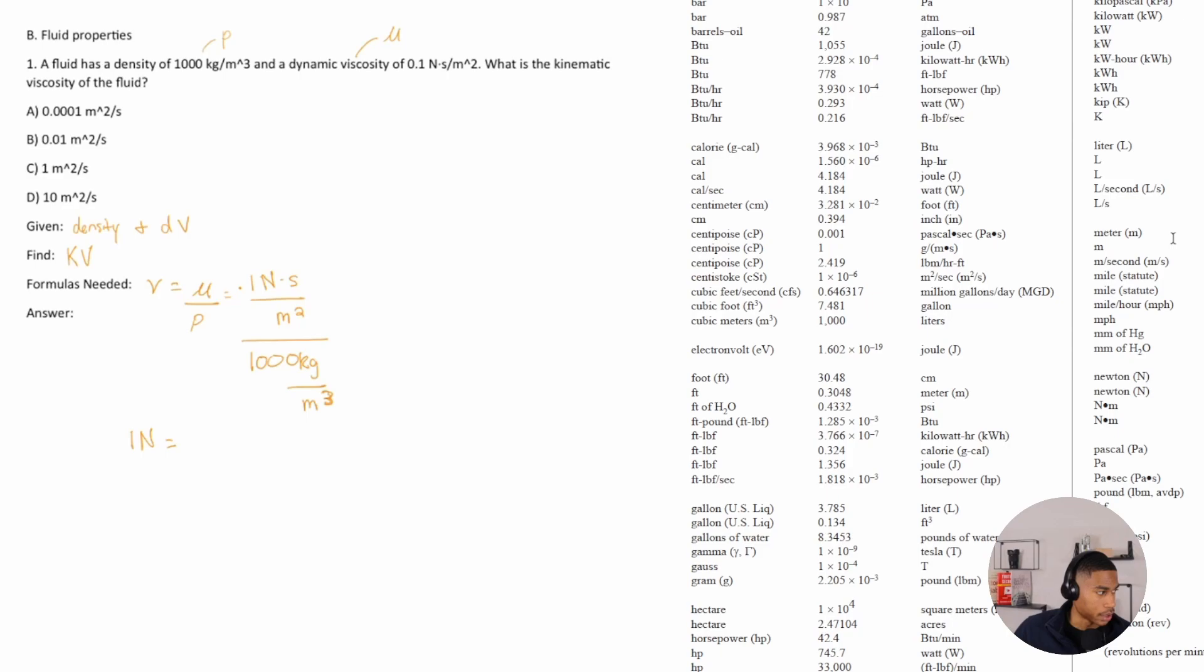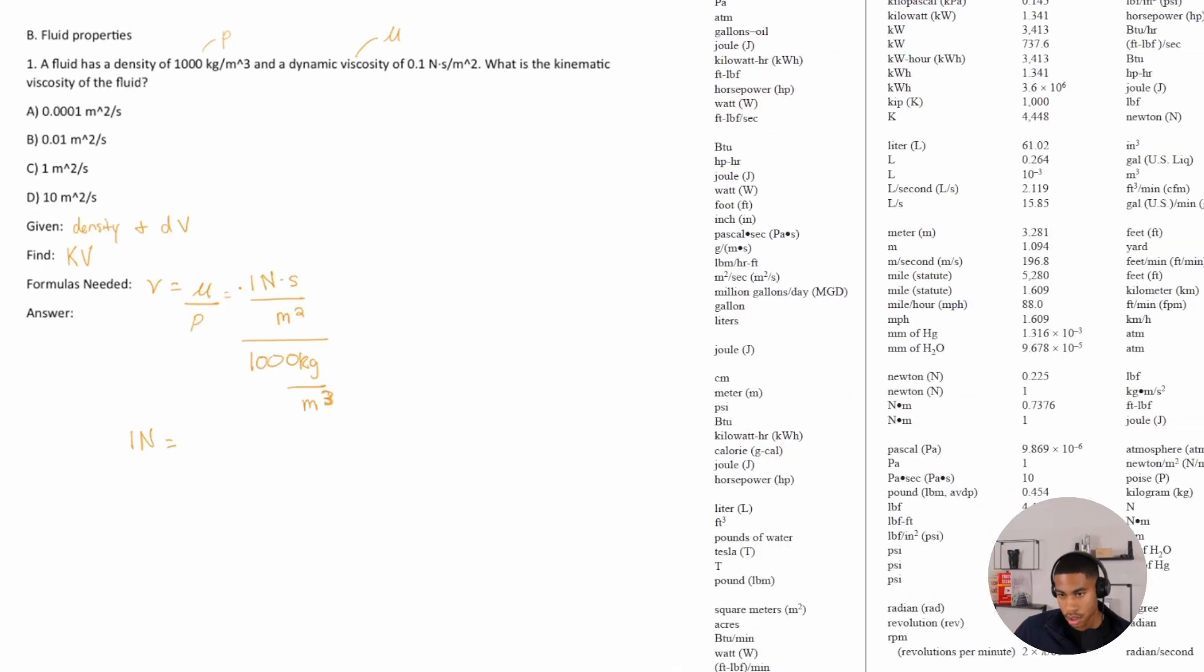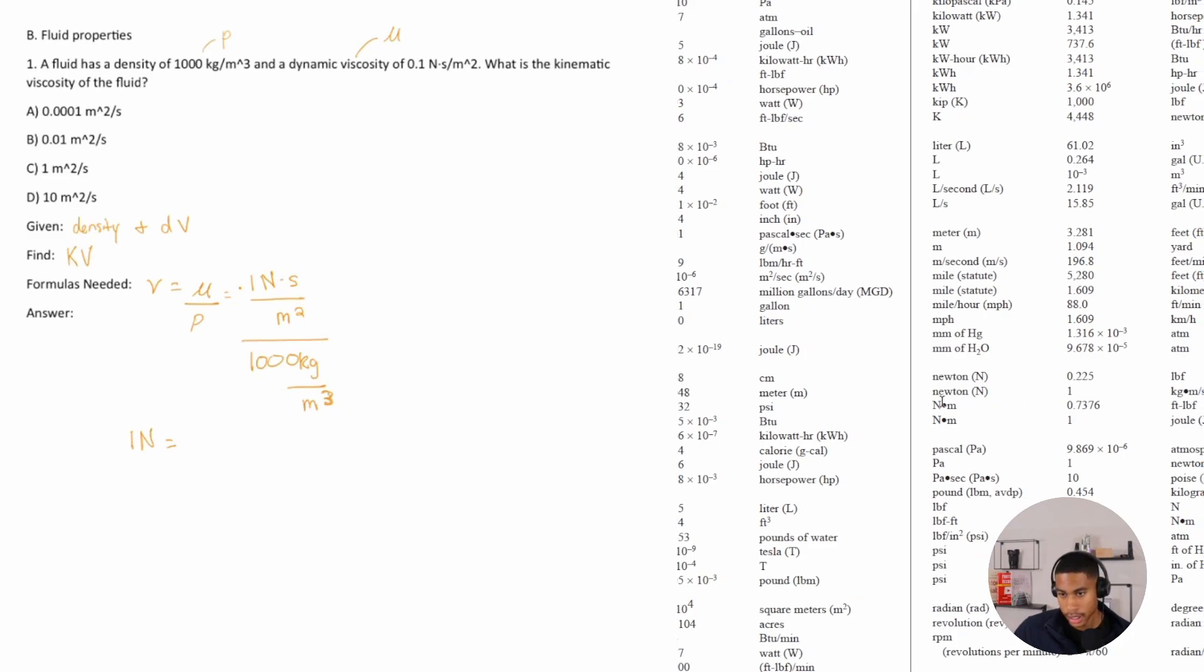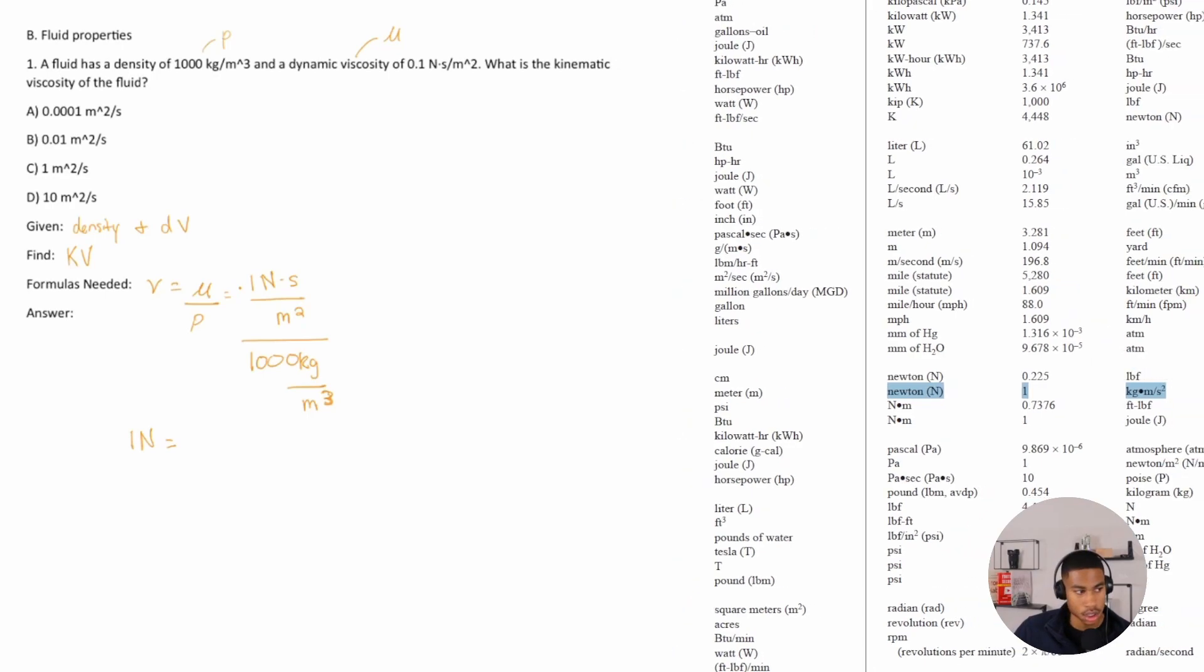So I just jump to the conversion section. And we learn that one newton is equal to one kg times our meters over second squared. So one newton is equal to one kg times m over s squared. All right, how does that help us out here?